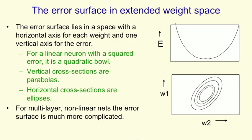So in this space, points on the horizontal plane correspond to different settings of the weights and the height corresponds to the error that you're making with that set of weights summed over all training cases.